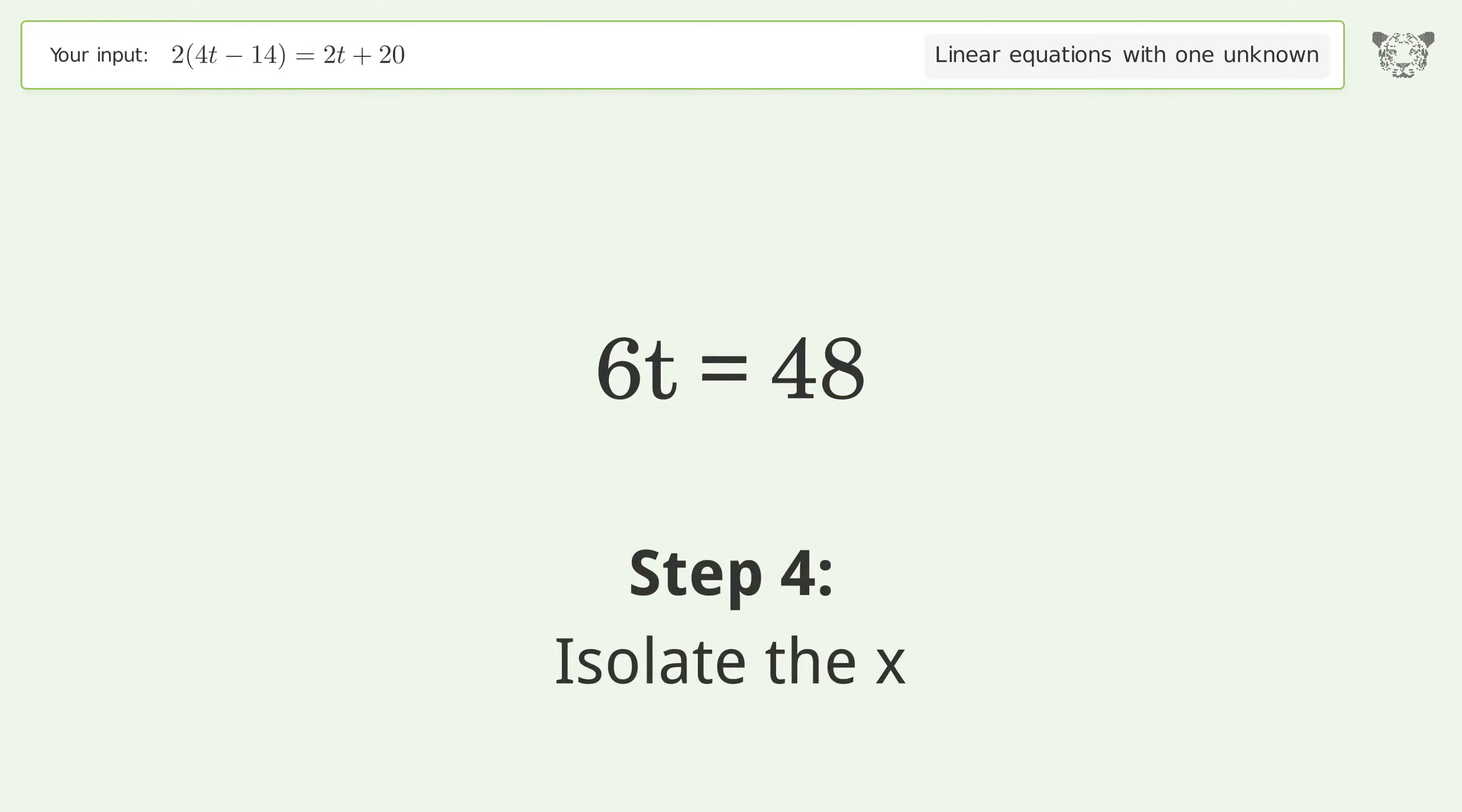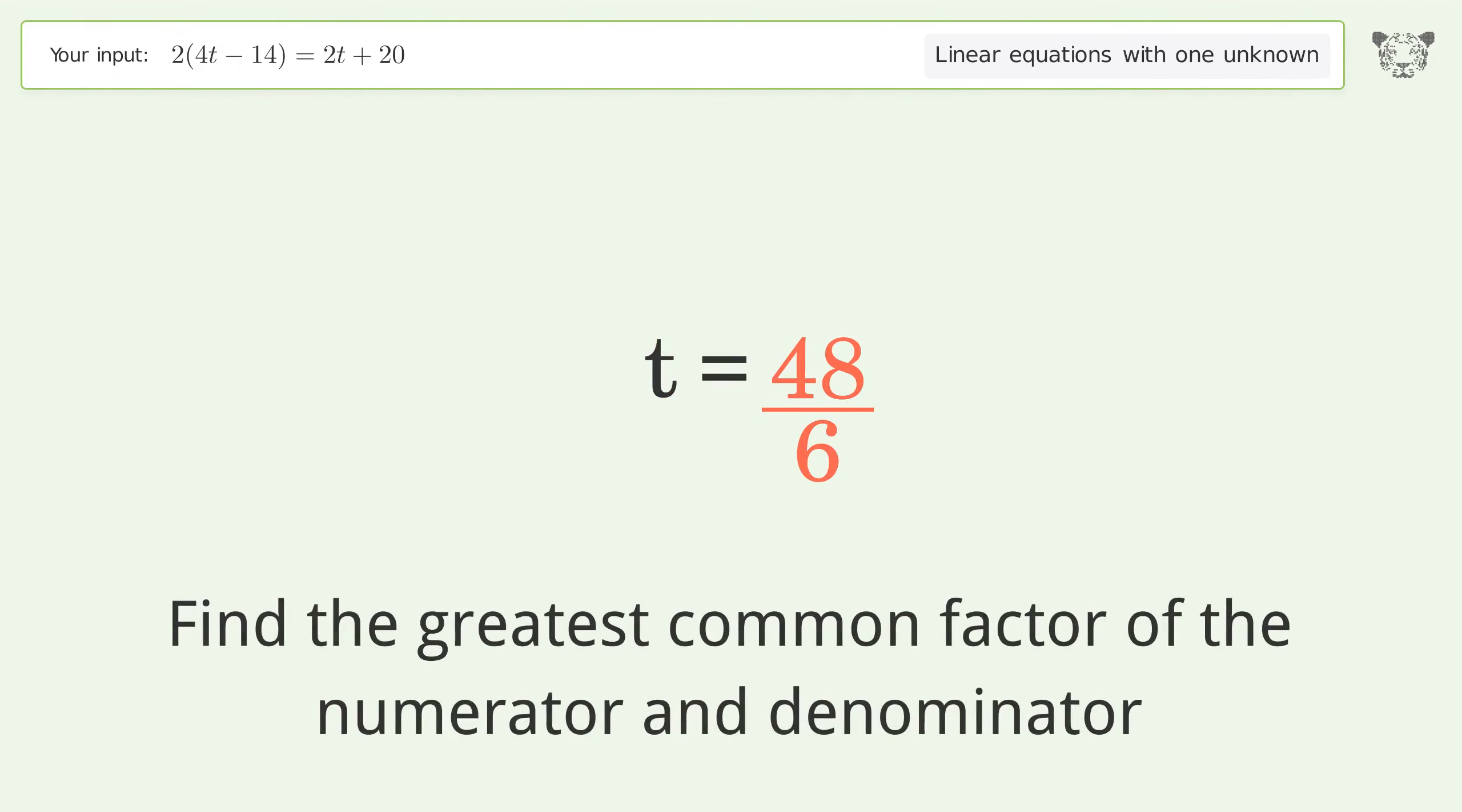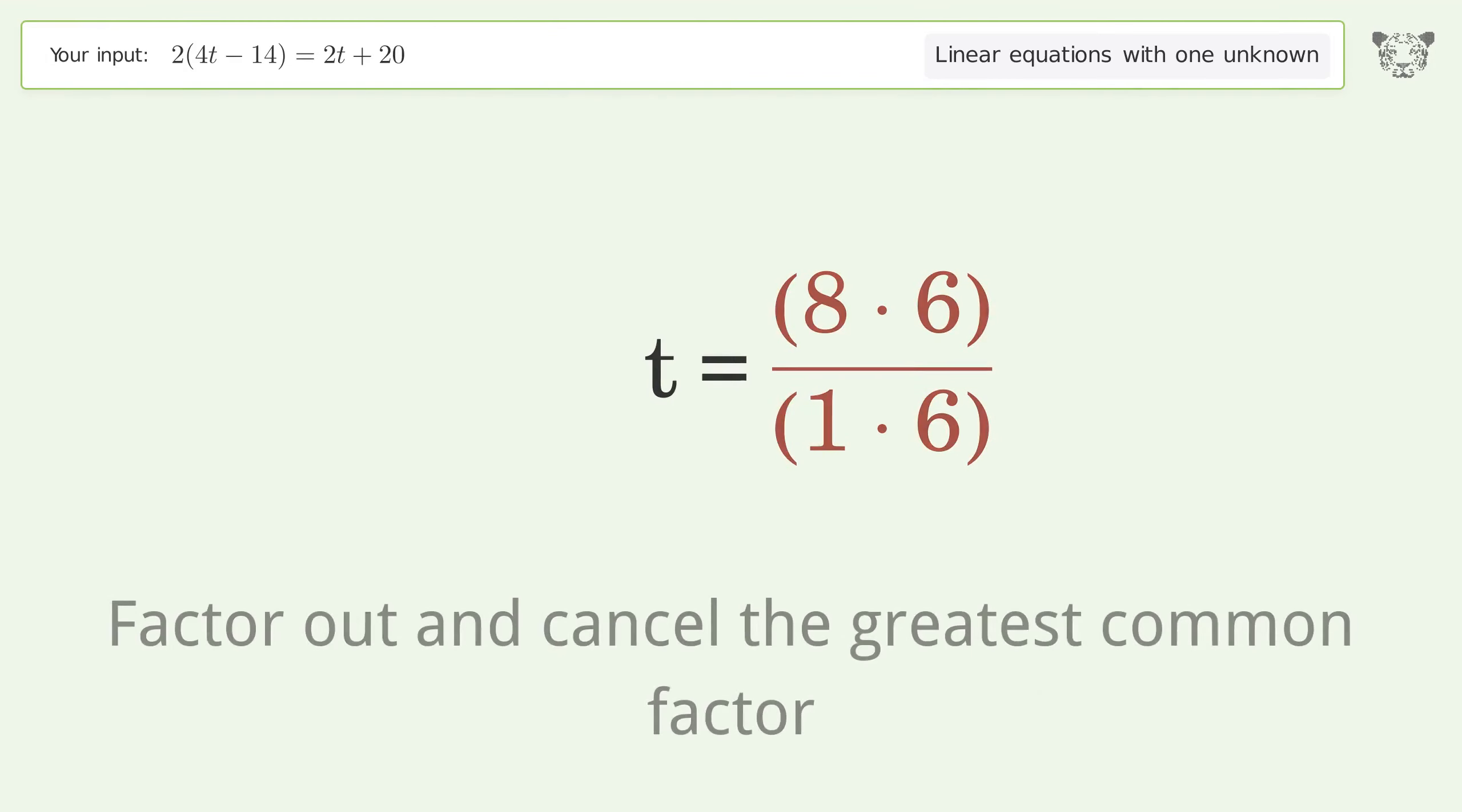Isolate the x. Divide both sides by 6. Simplify the fraction. Find the greatest common factor of the numerator and denominator. Factor out and cancel the greatest common factor.